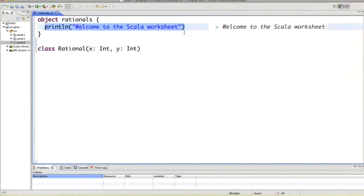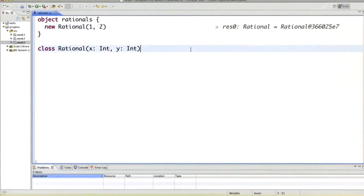So what we do here is we create a new rational of one and two. And what we see is we have created a new value of type Rational. And the value prints as Rational@[hash code]. The number happens to be the hash code of that rational number. That's just a peculiarity of the JVM. If you don't define how things should print, that's the way they print.